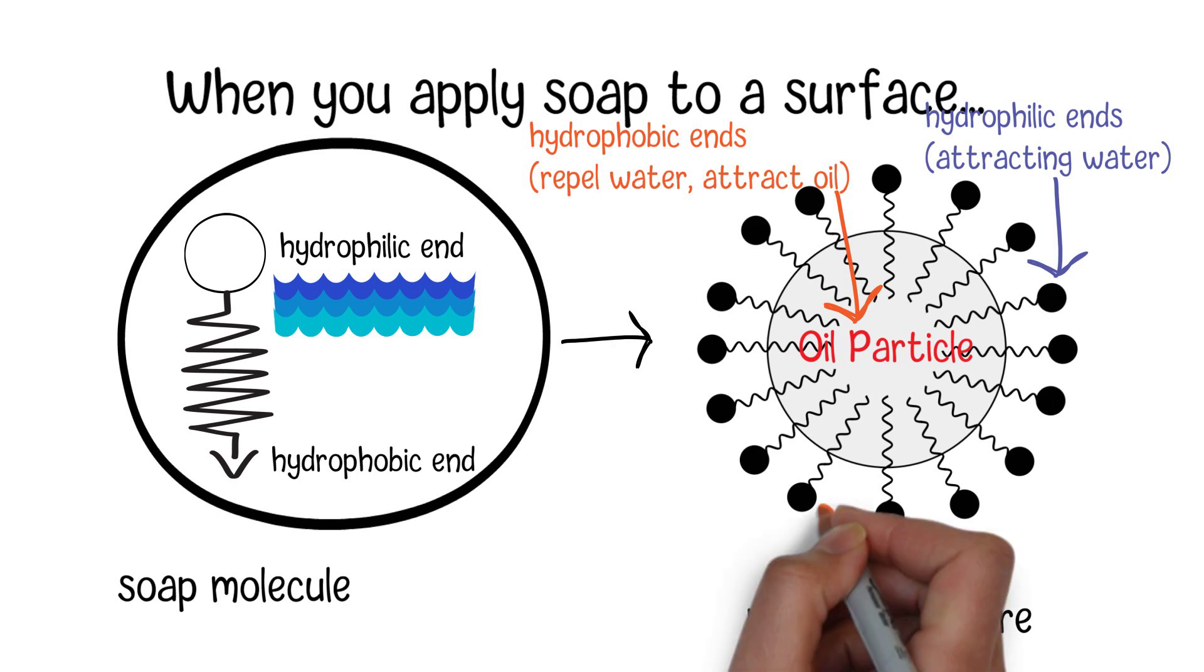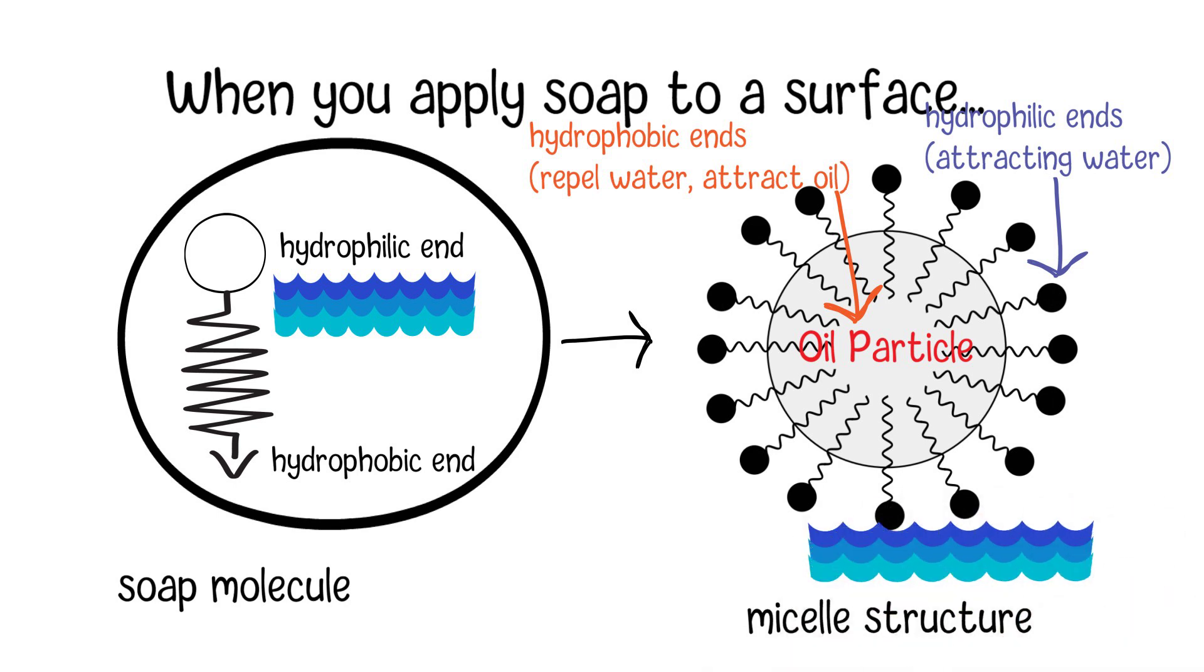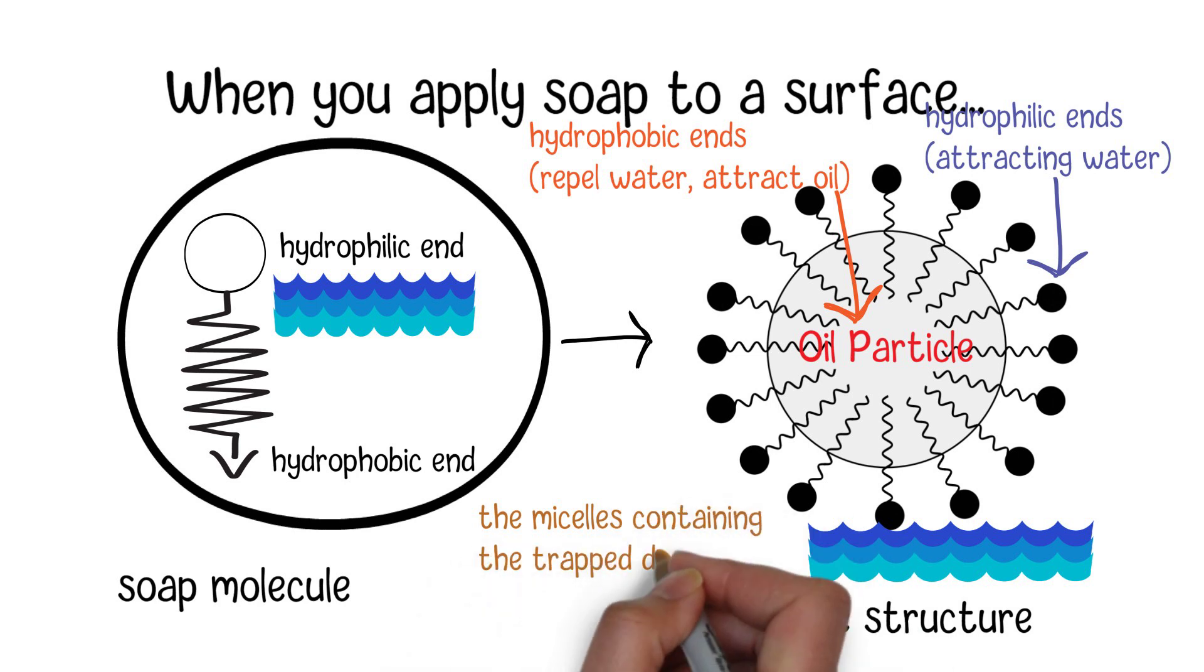Since the hydrophilic ends of the soap molecules are attracted to water, the micelles can be easily washed away with water. As you rinse the soapy surface with water, the micelles containing the trapped dirt and oils are carried away, effectively removing them from the surface.